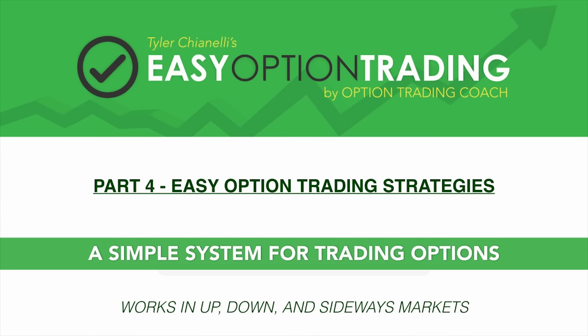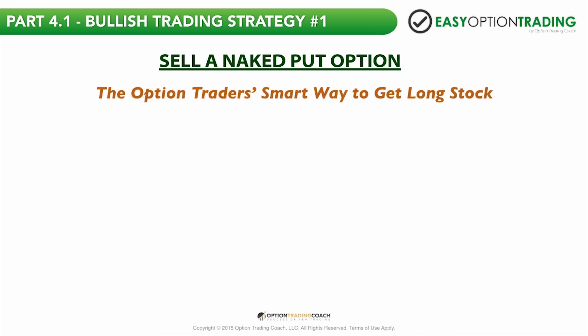You're going to be learning nine different trading strategies in this part, so it's going to be very in-depth. Of those nine different strategies, four are going to be bullish, three are bearish, and the last two are going to be sideways. In this video you're going to learn how to sell a naked put, how to buy a vertical call spread, how to sell a vertical put spread, and how to buy a LEAPS call option.